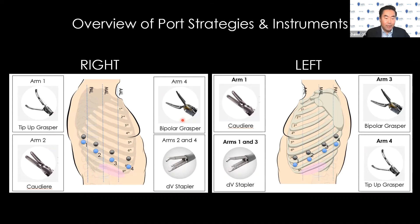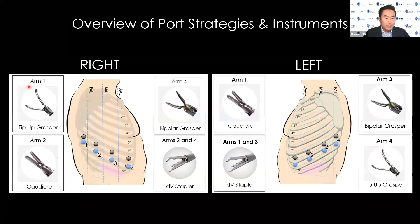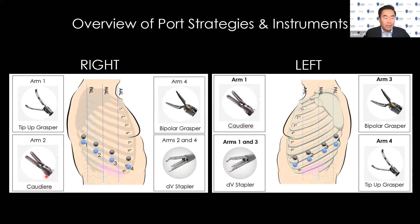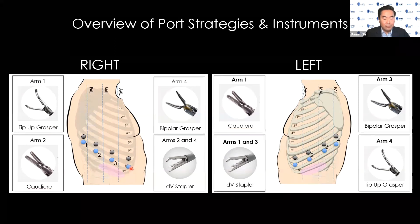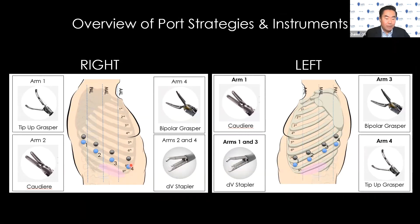The diagram also shows instrument preferences by majority consensus. The posterior instrument is typically the tip-up grasper. The left hand — the retracting or exposing hand — is a Cadiere. Most people use a bipolar energy device in their dissecting hand, with the long bipolar grasper being the most common. The stapler can be placed anteriorly or posteriorly, so you need to plan ahead: you'll need a 12-millimeter trocar anteriorly and a 12-millimeter trocar at the second-most-posterior position if you want both anterior and posterior stapling angles.